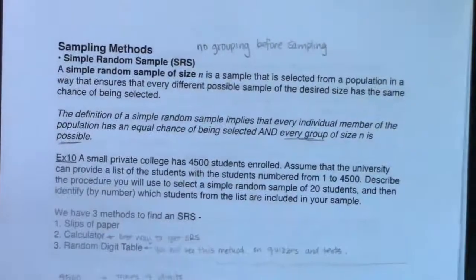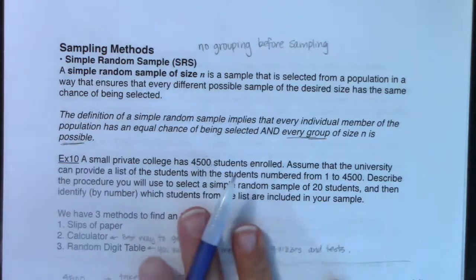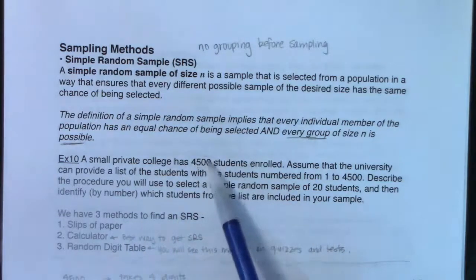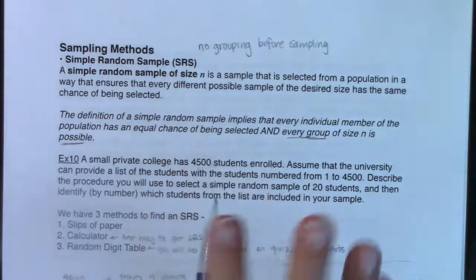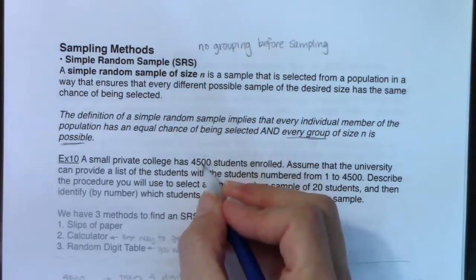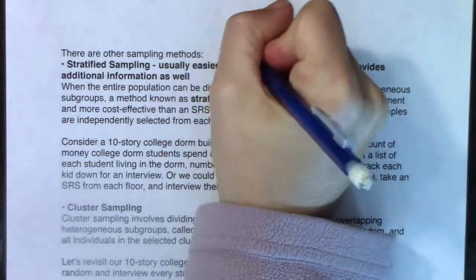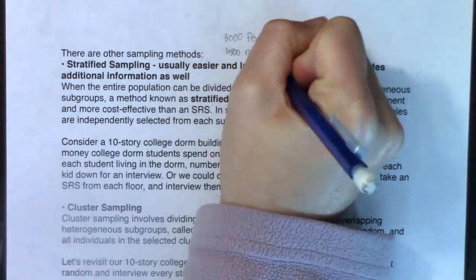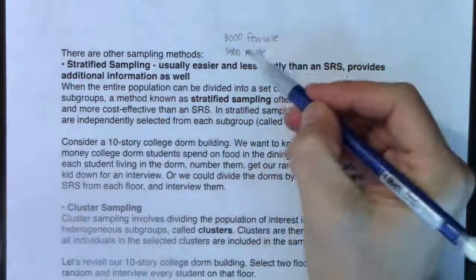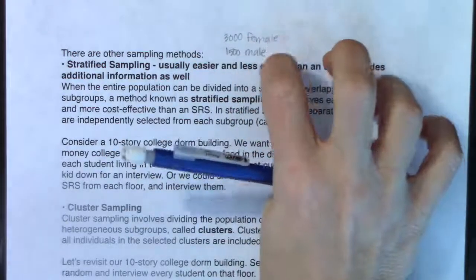In stratified sampling, separate random samples are independently selected from each subgroup, which we call strata. Let's go back to our previous example with the college that had 4,500 students. Let's say I grouped these students by some characteristic - an easy one to think of is gender. Let's pretend these 4,500 students were 3,000 female and 1,500 male, so I have a strata of female, strata of male.